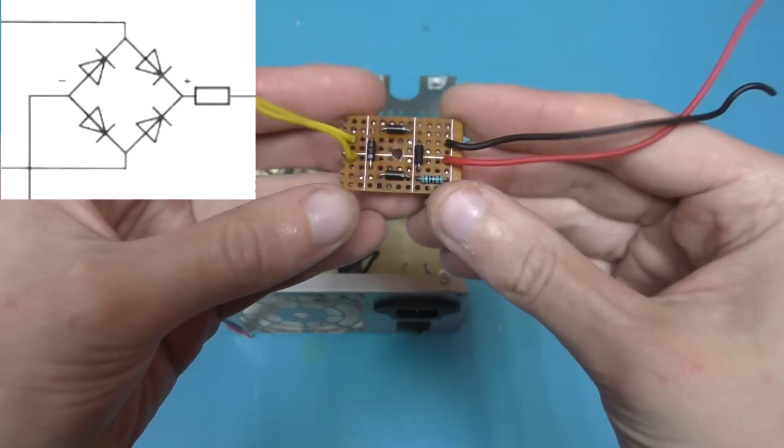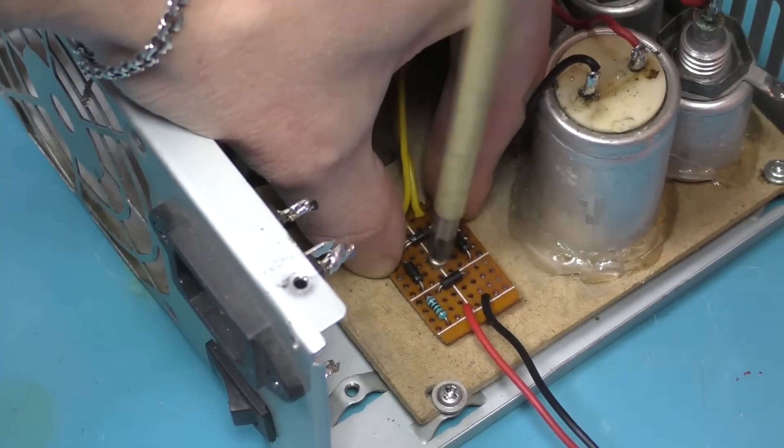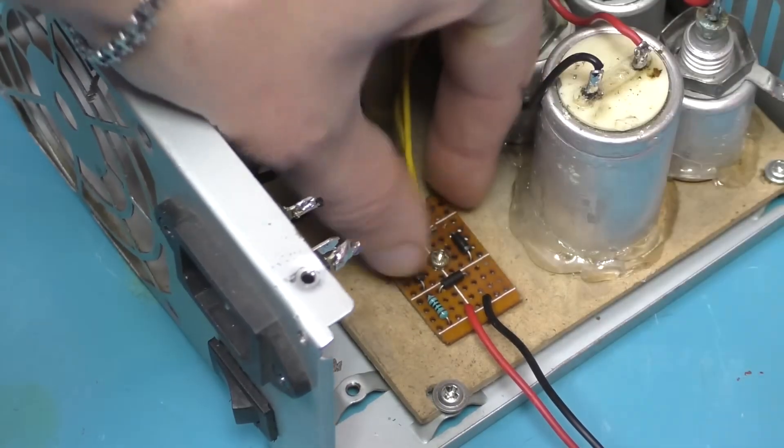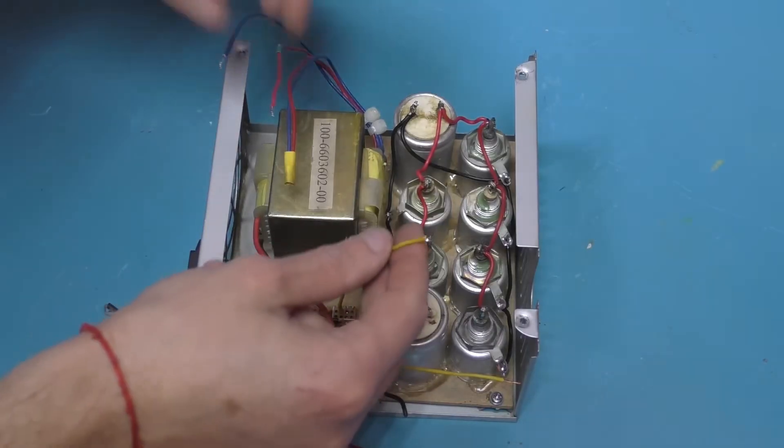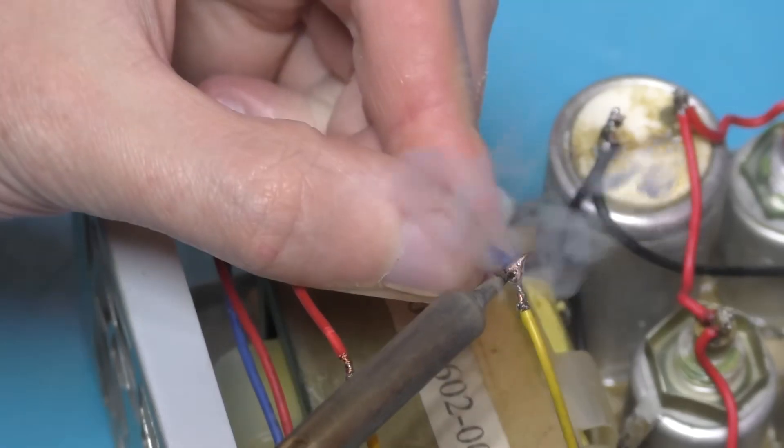Connect a diode bridge with a 10 ohm resistor soldered in series to its positive terminal. The board can be attached to the fiberboard using one screw. Now connect the transformer to the diode bridge and its direct current output to the capacitors.